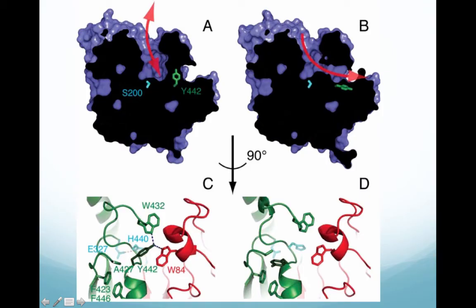This figure highlights exactly how the tyrosine 442 residue rotates to create this backdoor exit for the hydrolysis products. As you can see, it's blocked, but with the rotation, there's a convenient exit for the products to leave the enzyme.